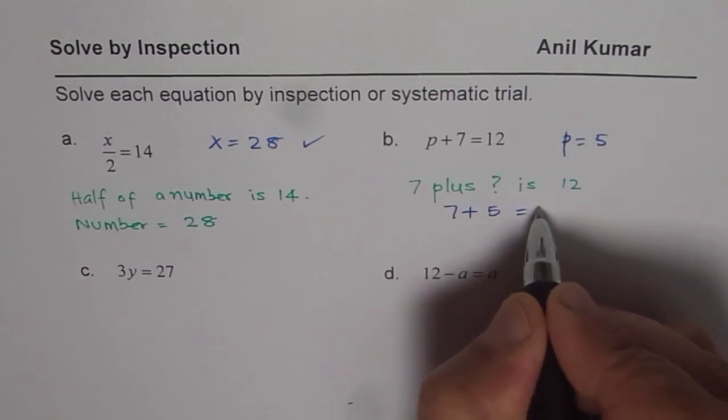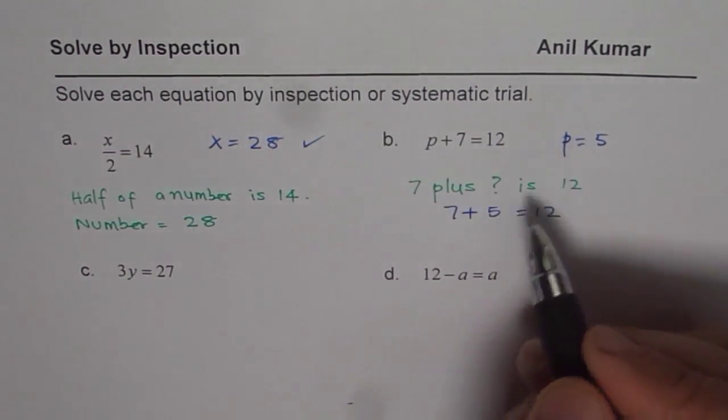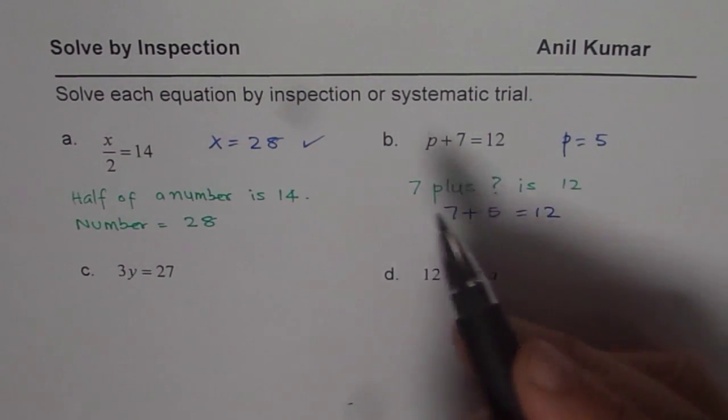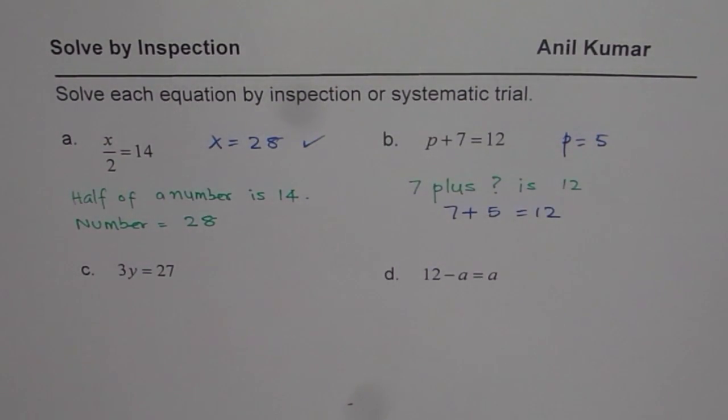What is 7 plus 5? It is indeed 12. So that could be the way to solve using inspection method. I hope you understand these steps involved.